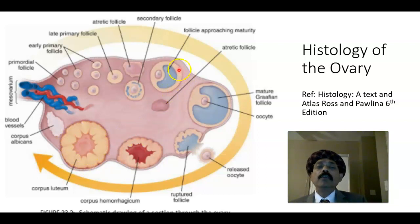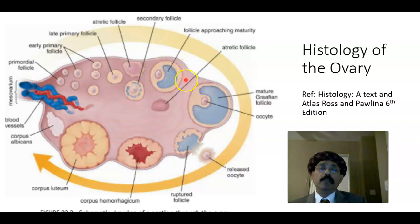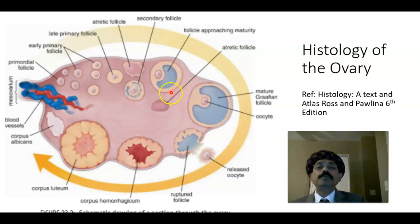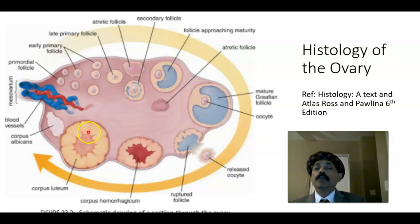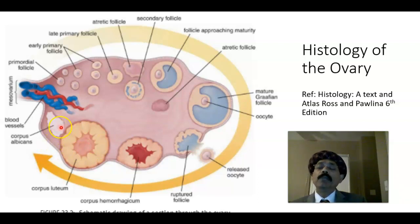Then there will be conversion of the follicular cells into corpus luteal cells by the action of the luteinizing hormone. This follicle is surrounded by the theca externa and theca interna cells. The theca interna cell produces estrogen, and the corpus luteum cell will produce progesterone. So if there is no fertilization, then this corpus luteum will become atretic and will degenerate into corpus albicans.